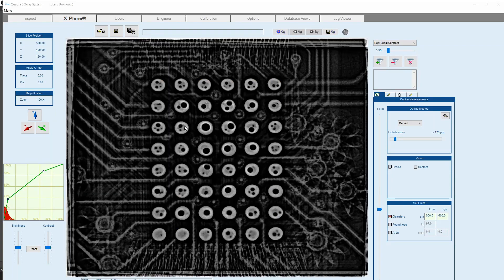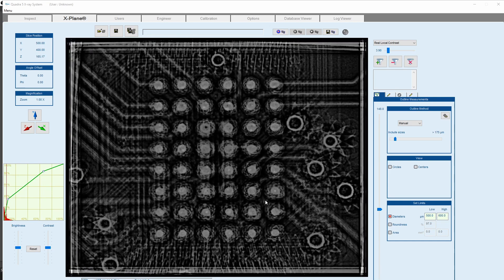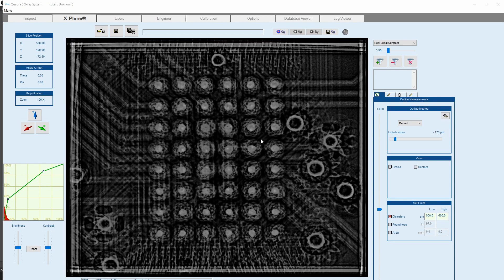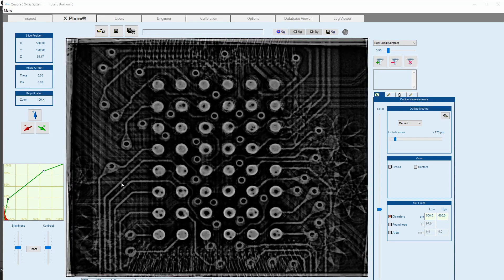Here we see voiding in the solder. Here we can see the PCB tracks. Here we see the information in the PCB such as vias. And to the top of the package we see more tracks. And there you have it, x-plane in under 60 seconds.